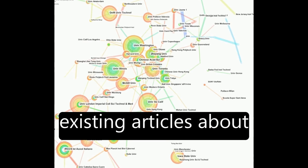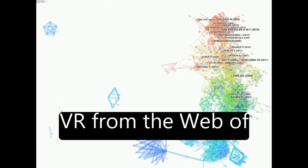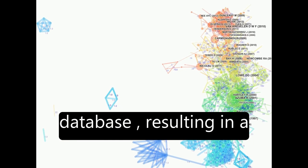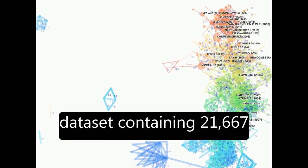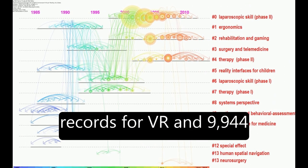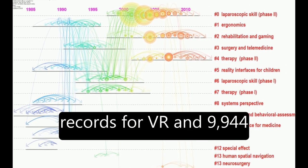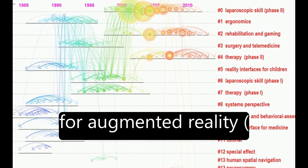The authors collected all existing articles about VR from the Web of Science Core Collection database, resulting in a dataset containing 21,667 records for VR and 9,944 for augmented reality, AR.